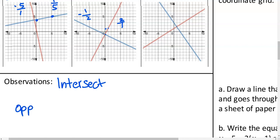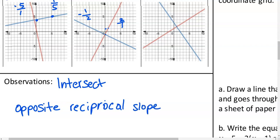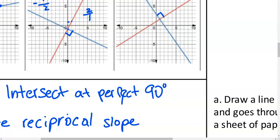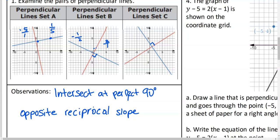Reciprocal is very fancy for 'flip the fraction.' So they're going to have opposite signs - one will be positive and one will be negative - and the reciprocal slope. They definitely intersect and they have an opposite reciprocal slope. Their intersection is very special - we get into a little geometry here. They intersect at a perfect 90 degrees, and that's because of the opposite reciprocal slope that they have. That will always happen.